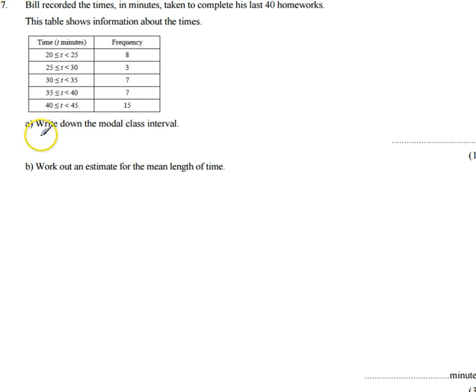For part A we're being asked to write down the modal class interval. Now the modal class interval means the most common class interval. So which is the most frequent times it took him to complete his homework. If we have a look here, this tells us the frequency, the most frequent is this here. So the modal class interval is going to be 40 to 45 minutes. Most of his homeworks took in that class interval to complete.